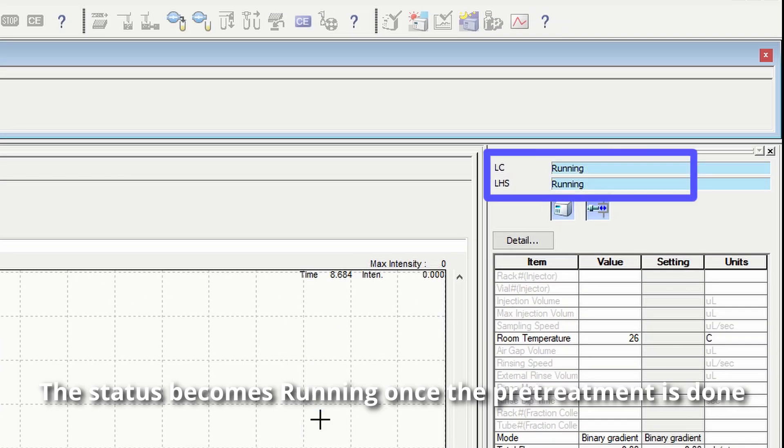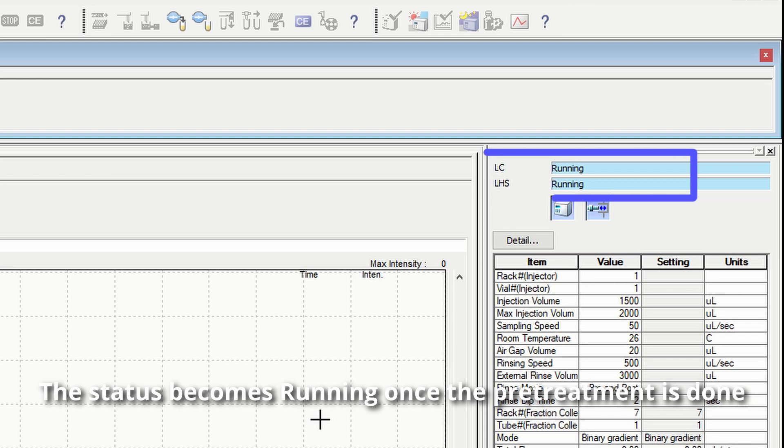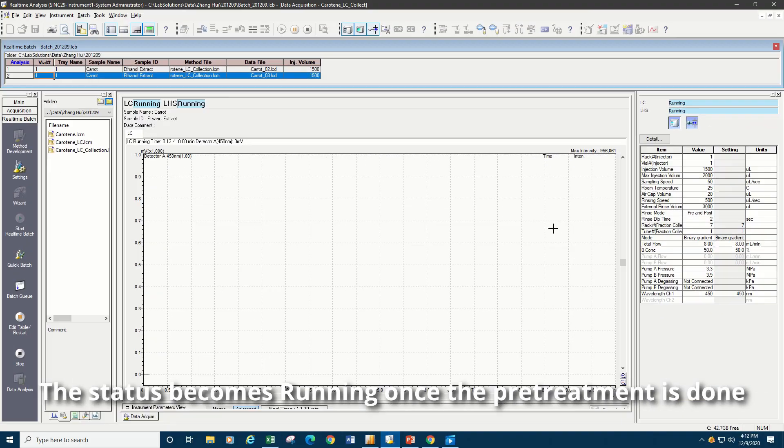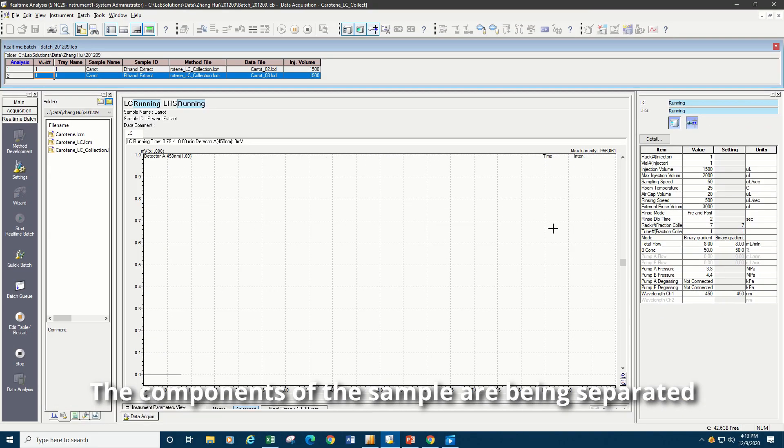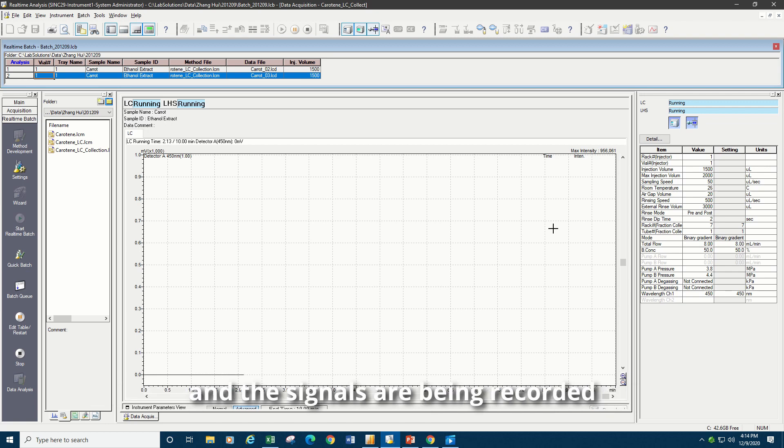The status becomes running once the pre-treatment is done. The components of the sample are being separated, and the signals are being recorded. The real-time chromatogram can be monitored in the chromatogram view window.